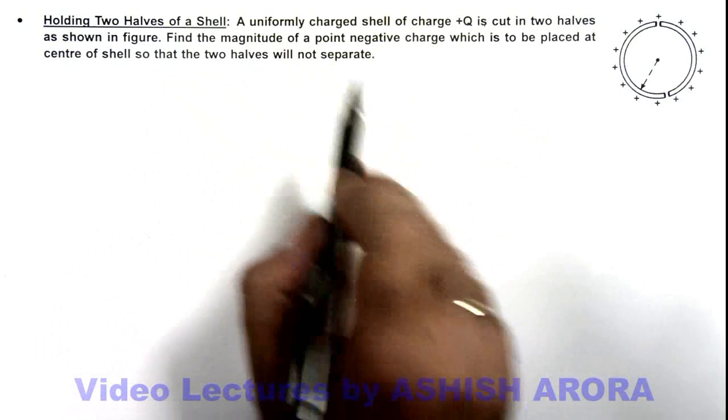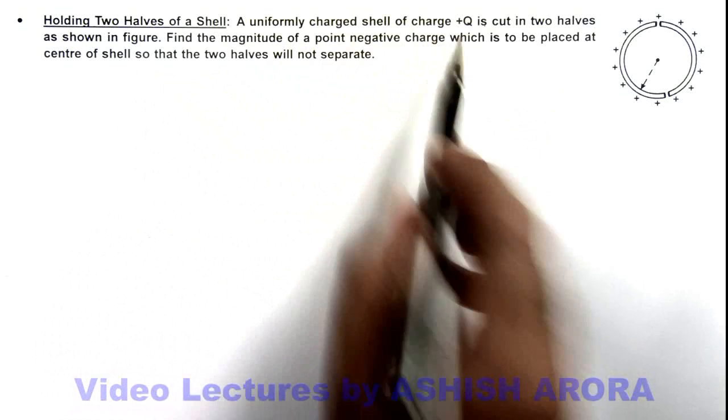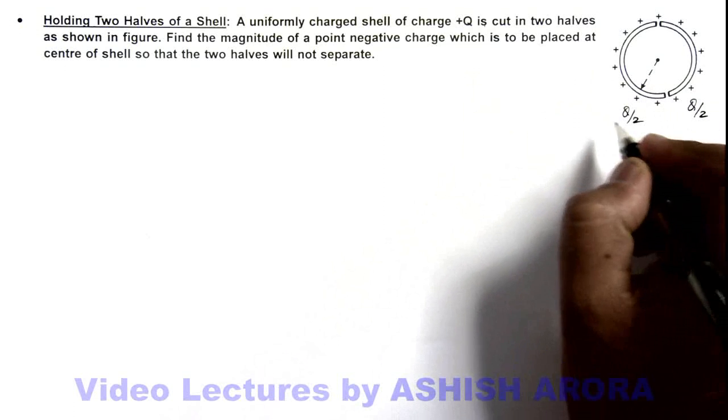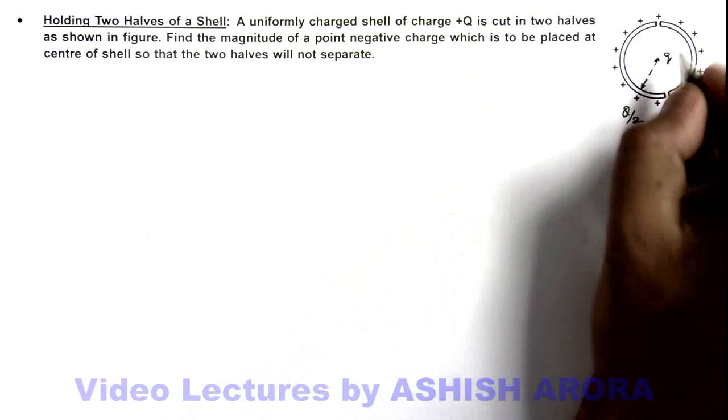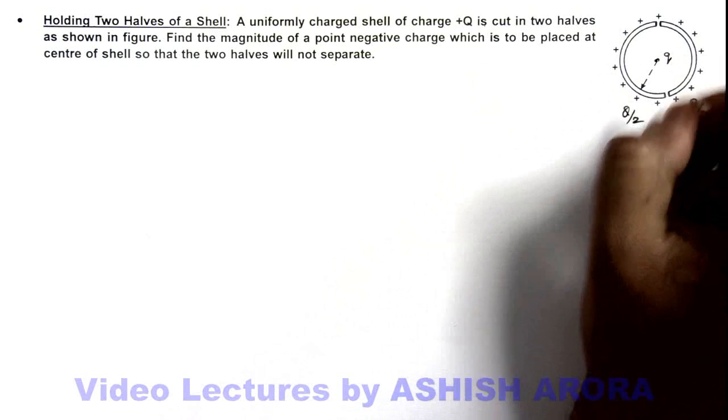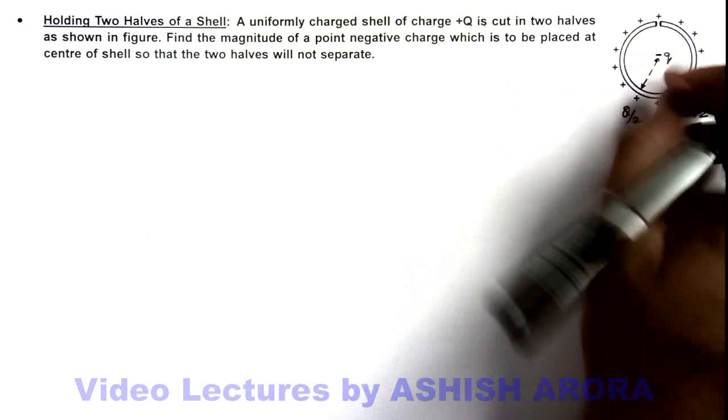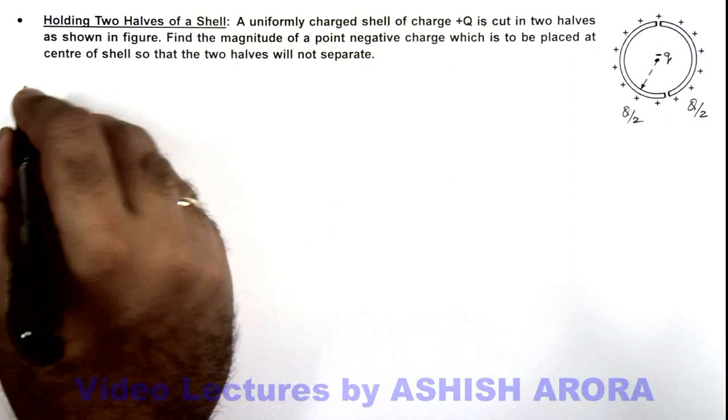Here, we are given that the shell has charge plus Q, so on the two shells charge will be Q by 2 and Q by 2. We are required to find the value of this charge which is placed at center so that these two will not separate. So obviously this charge must be negative so that it'll attract the two, which will balance the repulsive force between the two halves, which we have calculated in another illustration earlier also.